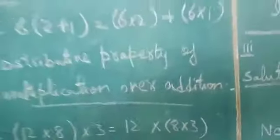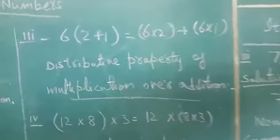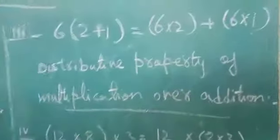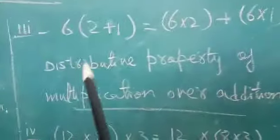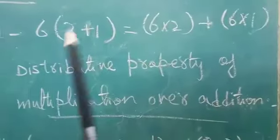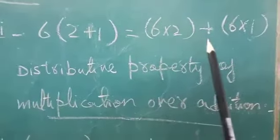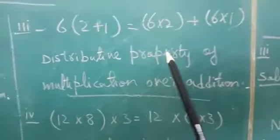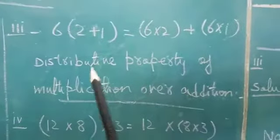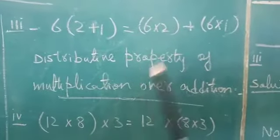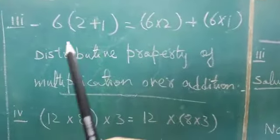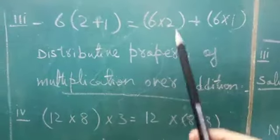What I have written is the distributive property of multiplication over addition. Distributive involves three digits which are all multiplied, and addition is also involved. Two properties are used here, so this is the distributive property of multiplication over addition.